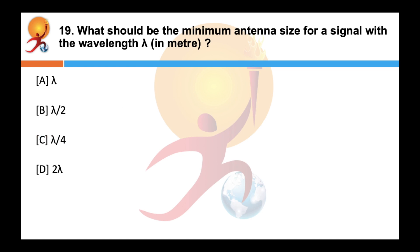What should be the minimum antenna size for a signal with the wavelength lambda in meters? Correct answer is C. An antenna is needed for both transmission and reception. Lambda upon 4 should be the minimum antenna size, i.e. in meters, for signal with the wavelength lambda.